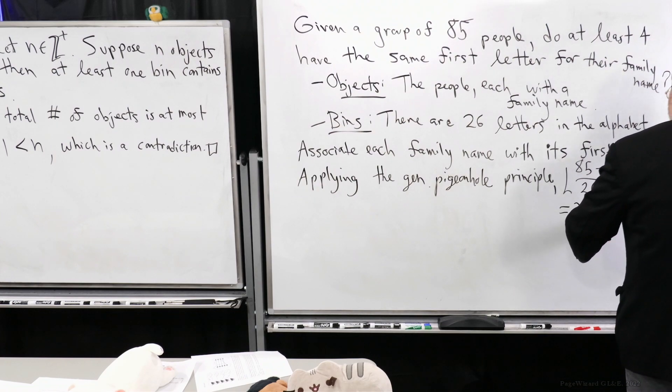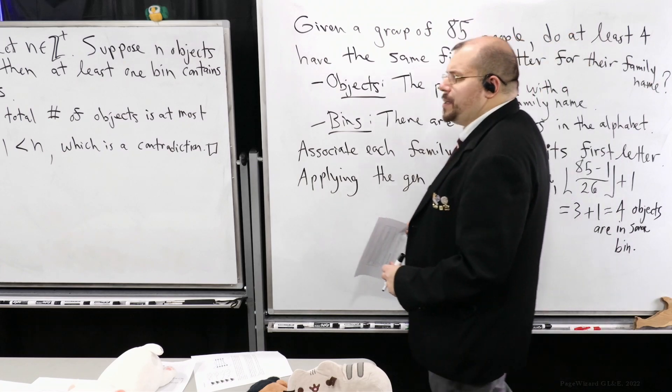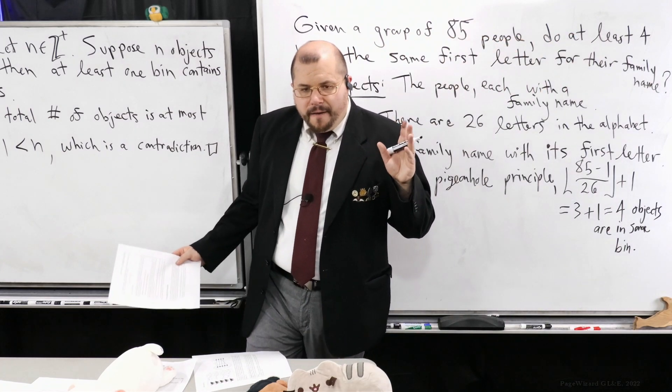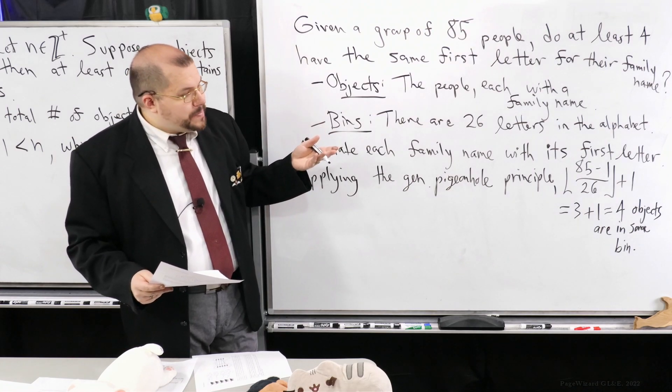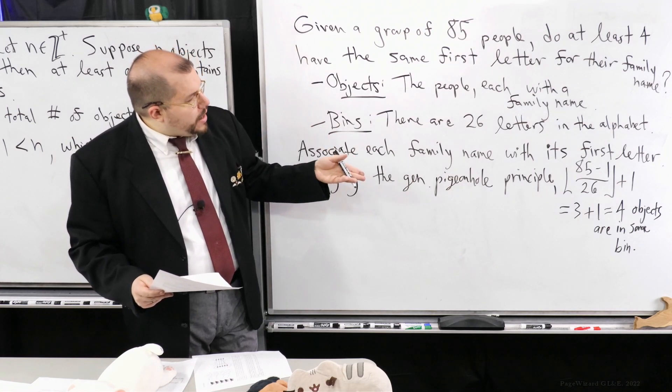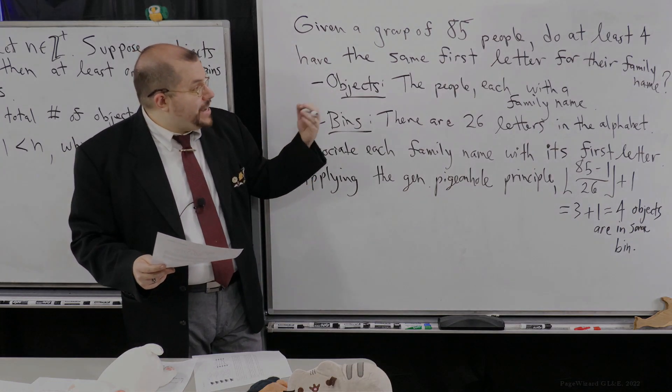So there's going to be 4 objects in some bin. But what does that mean? That means that for my group of 85 people, each one with their own family name, there's going to be at least 4 of these people that are going to share the same first letter for their family name. So the answer is yes.